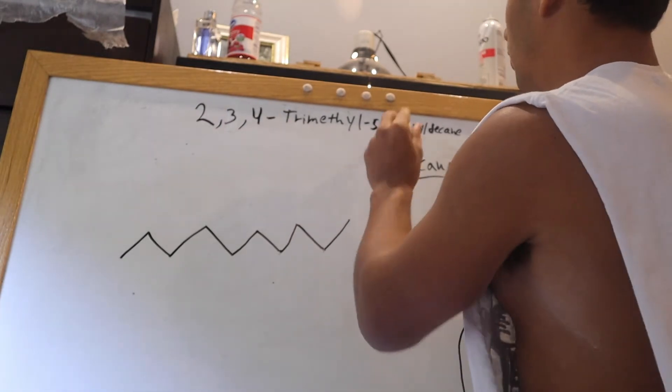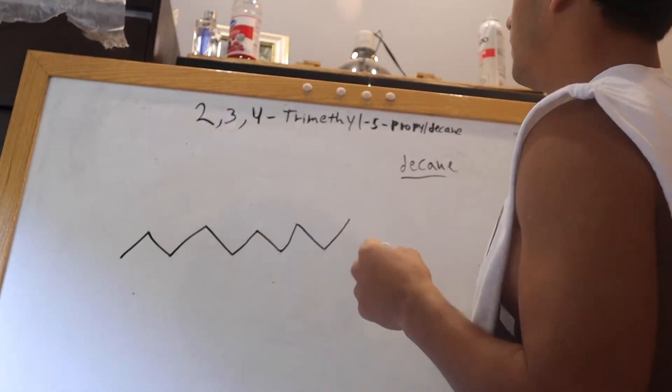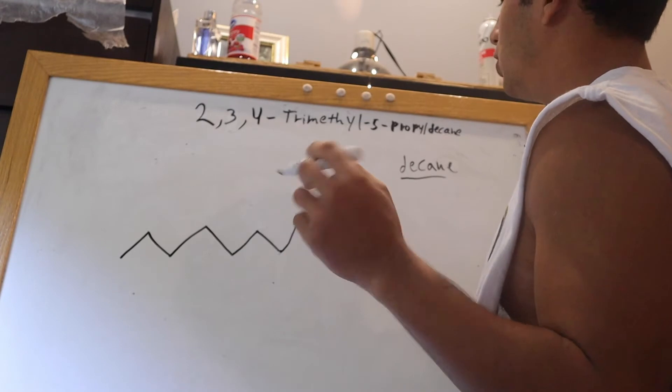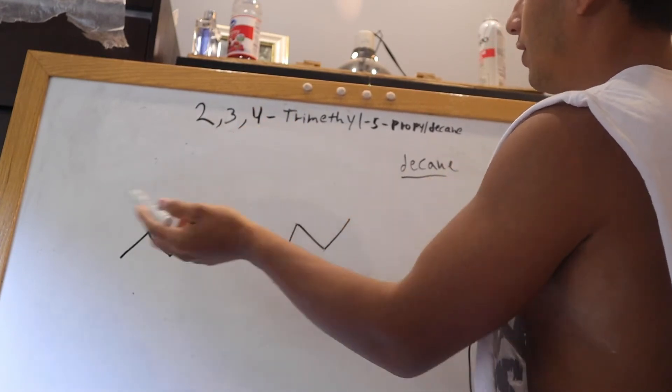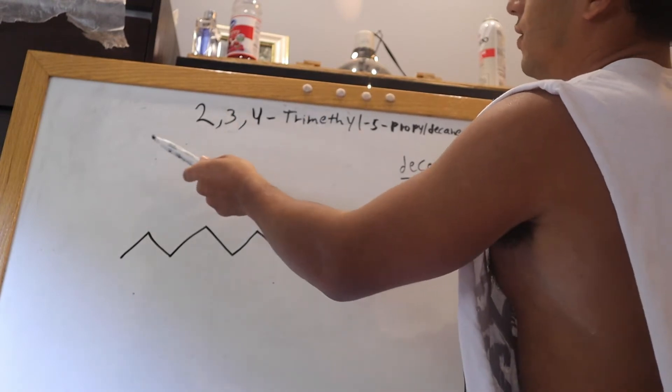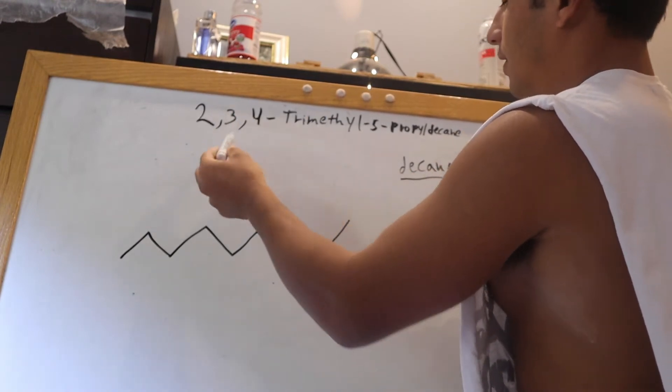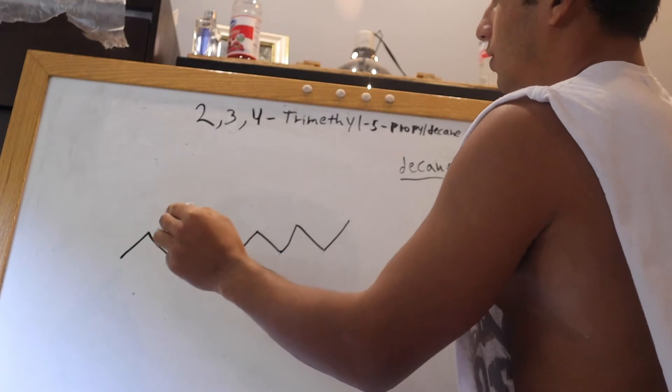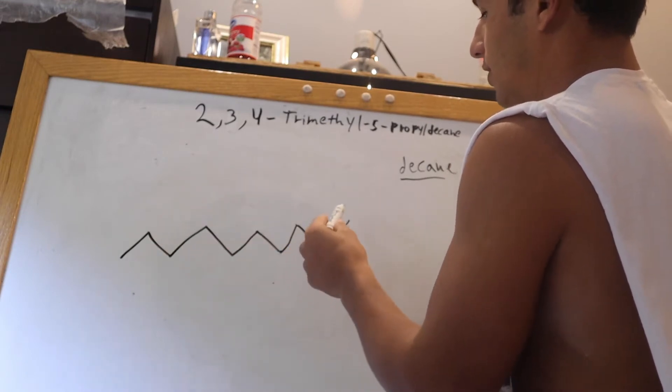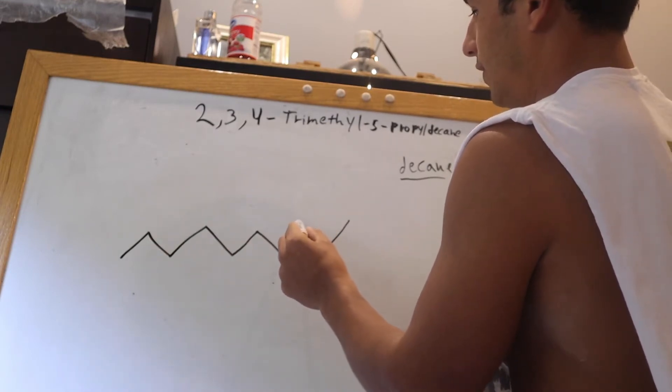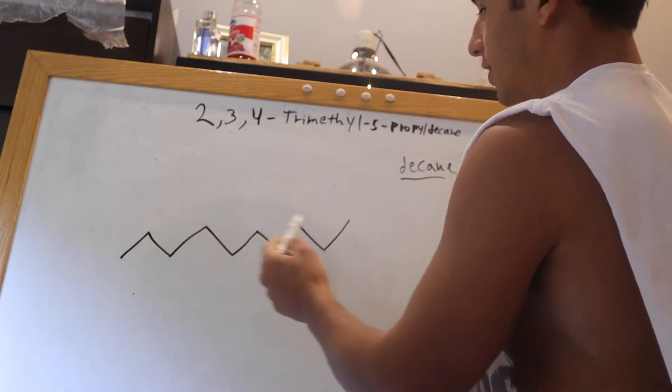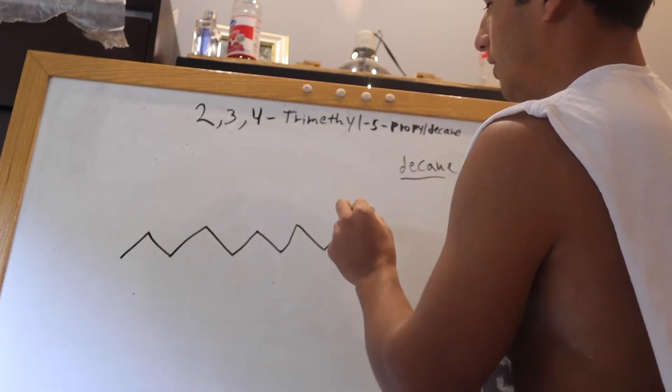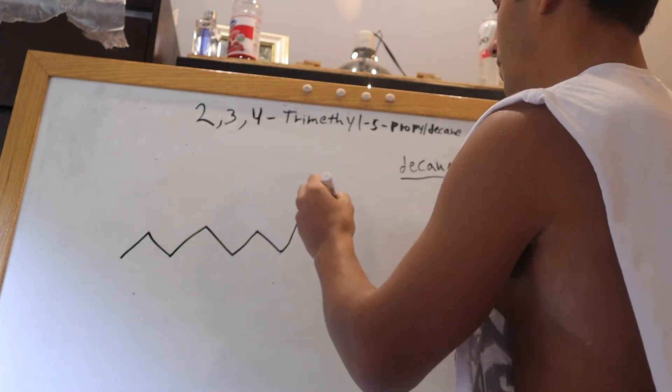And so we know that there's a propyl group on carbon 5. So first thing you should do is figure out how you're going to number your carbons. If there are 10 carbons, then if you go 1, 2, 3, 1, 2, 3, the third position on either side is going to be the same. So I like to start from right to left, so carbon 1,